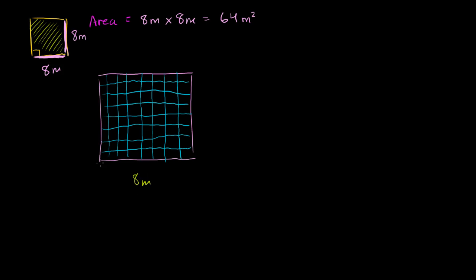We said this is 8 meters, and notice I have 1, 2, 3, 4, 5, 6, 7, 8 meters along the bottom. And the same thing along the side: 1, 2, 3, 4, 5, 6, 7, 8 meters. So when we're talking about 64 square meters, we're literally counting each of the square meters. A square meter is a two-dimensional measurement that's 1 meter on each side. What I'm shading here in yellow is 1 square meter. In each row we're going to have 8 square meters, and then we have 8 rows, so we have 8 times 8 square meters, or 64 square meters.